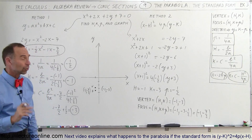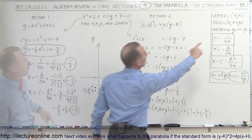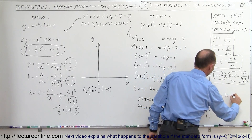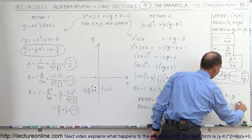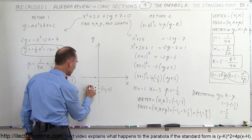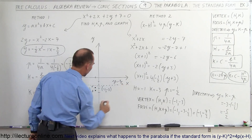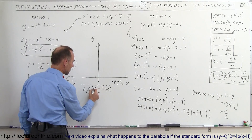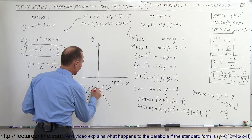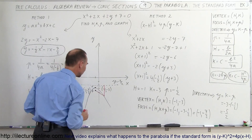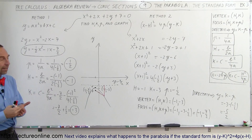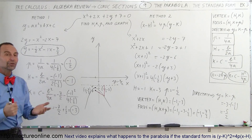The directrix has the equation y equals k minus p, so y equals negative 3 minus negative one-half, which gives y equals negative 5 over 2. The parabola opens with that directrix as a horizontal line. You can pick any point on the parabola and the distance to the focus equals the distance to the directrix — that's how we define it in standard form. Both methods allow you to find p, h, and k and graph the parabola. Whatever method you prefer, it doesn't matter.